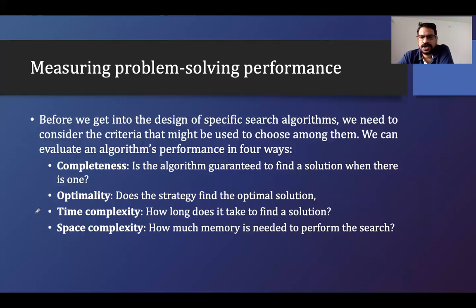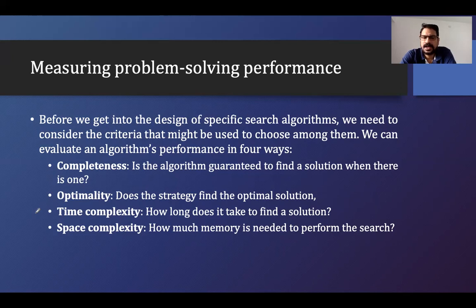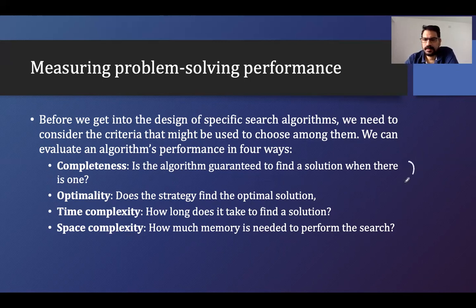Before we get into the design of a specific searching algorithm, we need to consider the criteria that might be used to choose among them. We can evaluate an algorithm's performance in four ways. Before choosing the searching algorithm, we have different searching algorithms, and we need to see which particular criteria — meaning the searching algorithm should have some performance criteria — and based on those performance criteria, we'll choose the searching algorithm that will give the best solution related to our problem. For that, there are four matrices, or performance measures.